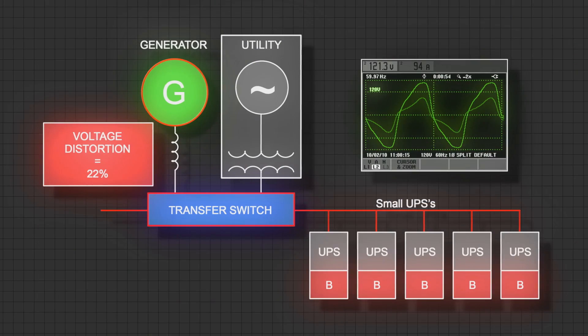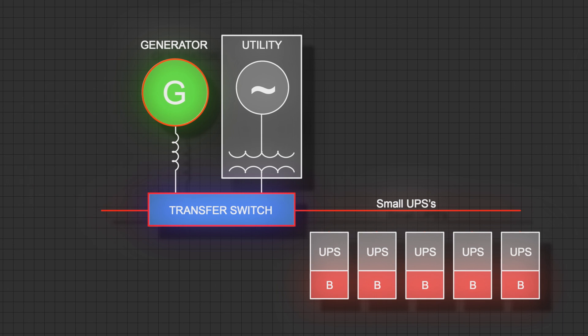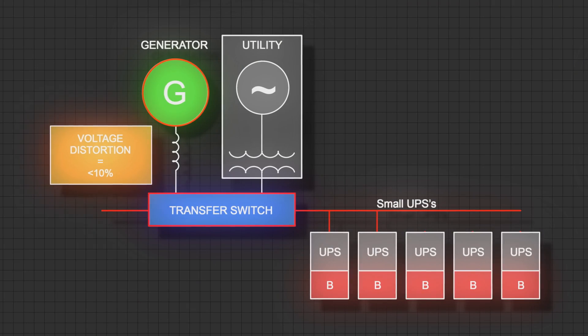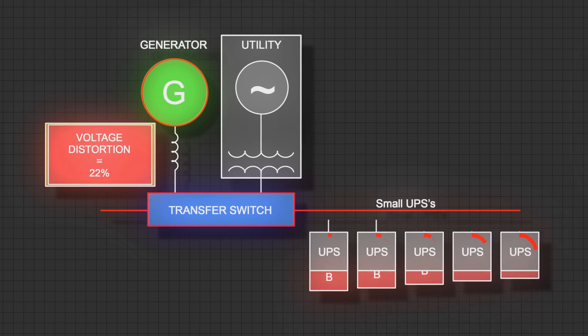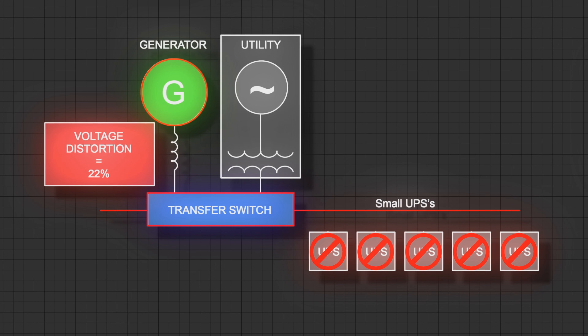The voltage distortion on the 120-volt UPSs went from 3% distortion on the utility source to nearly 22% distortion on the generator. Isn't that high for voltage distortion? Yes, extremely high. The UPSs determined that wasn't an acceptable voltage and transferred back to battery. Once enough of the UPSs went to battery, the voltage cleaned up and the UPSs decided the voltage was okay, so they went back to the generator source. Again, when enough UPSs came on and began charging batteries, the cycle repeated until the UPS batteries died and the load was dropped.